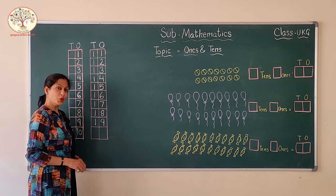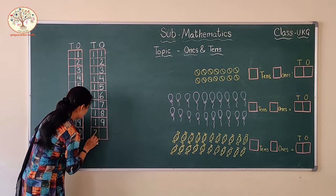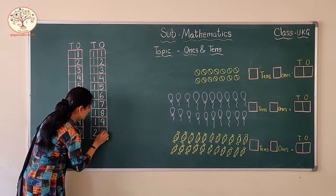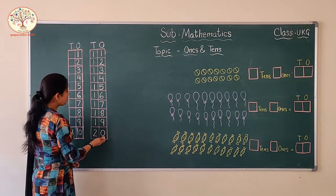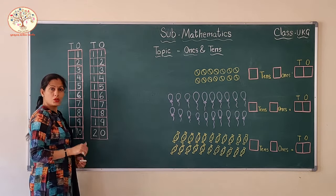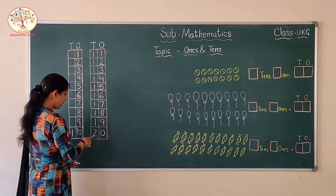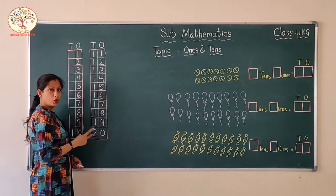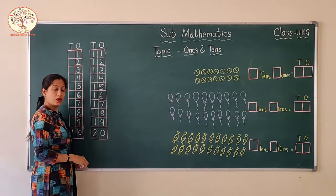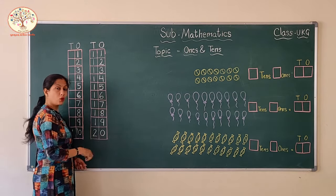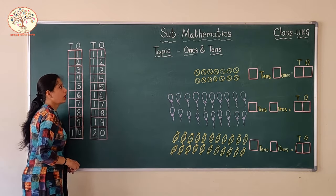2, 0 — 20. Very good. Now how many ones are here? 0 — no ones. And how many tens? 2 tens. So: 2 tens and 0 ones — this is 20.